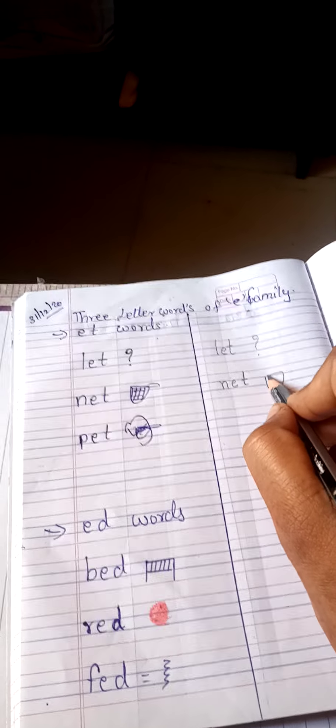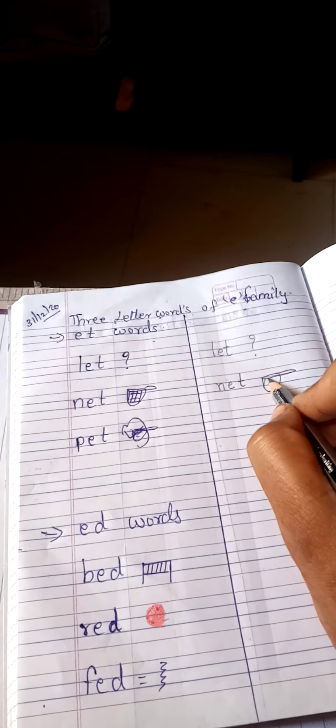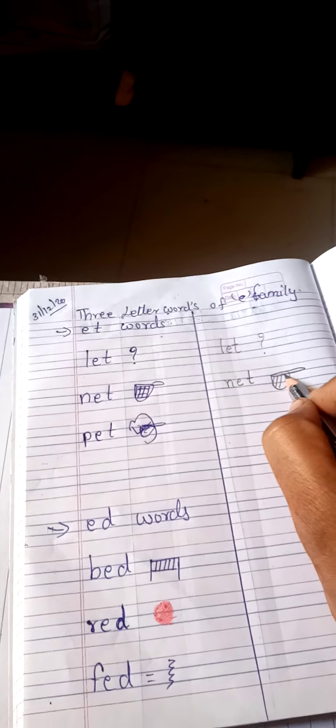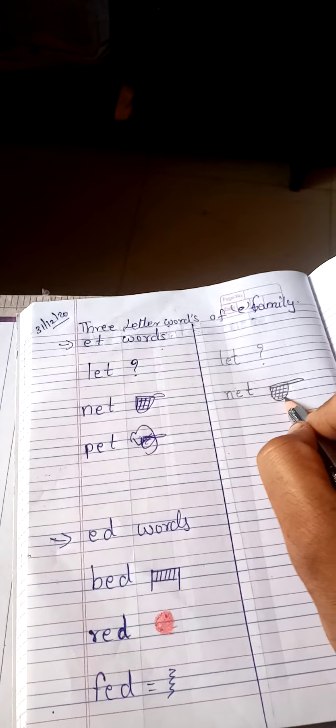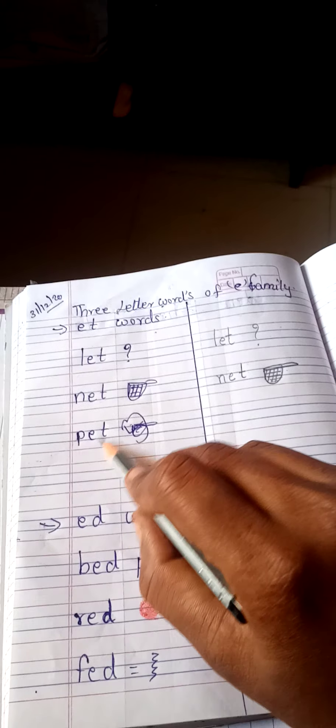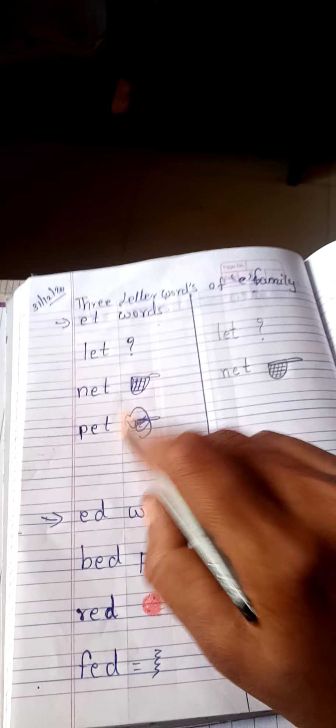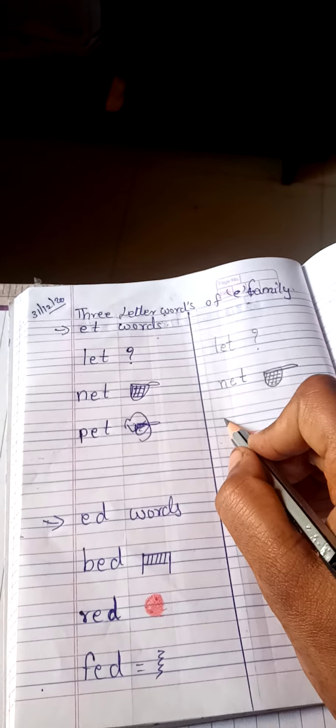Okay, now next, P-E-T, pet. So this is P-E-T, pet. Pet animals. So we have drawn here rat and mouse.